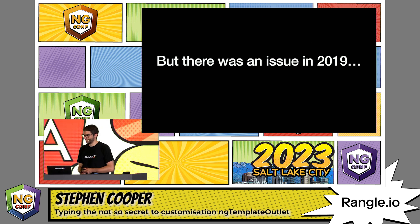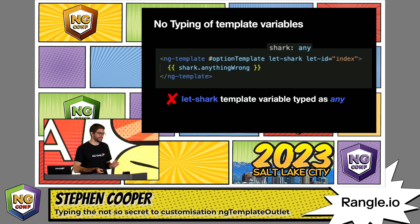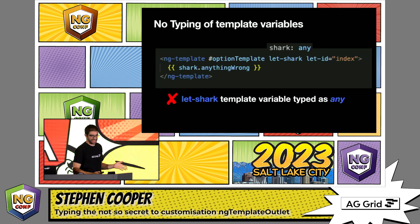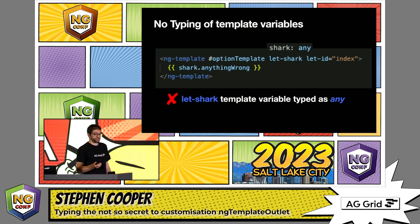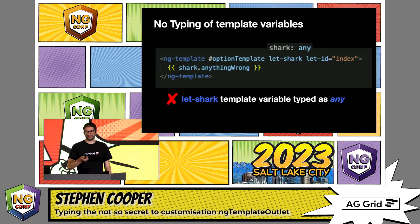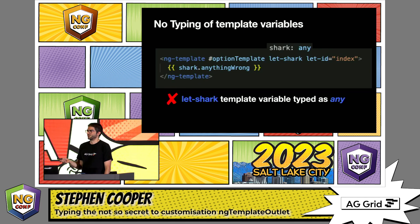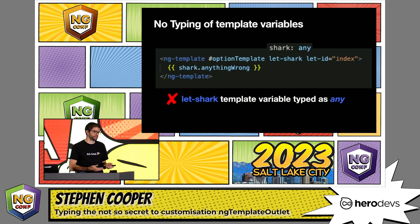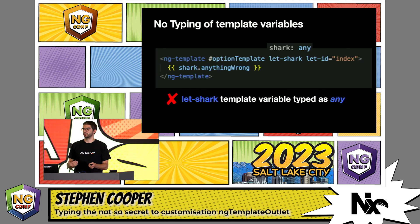But in 2019, there was an issue. You could easily write a template like this where you say let shark, but it's got an any type and you can say anything wrong and there's no type checking. So this was a really big blocker for some people. They were like, this is just a bit dangerous — I could run into issues where the template that I'm defining, the only way to test it is to see what's actually rendered. And I think it's fair to say we've all got used to Angular being so good at testing and checking our templates that this is a bit of a blocker.